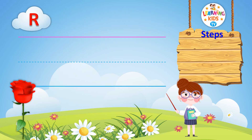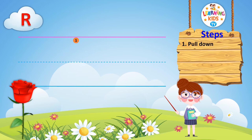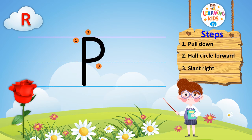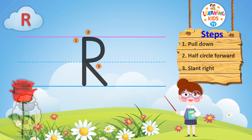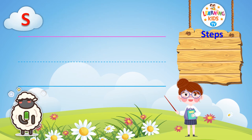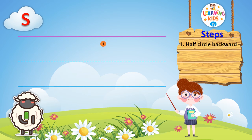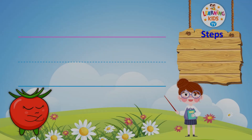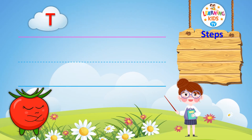Learn to write uppercase letter R. Step 1: half circle backward. Step 2: half circle forward.